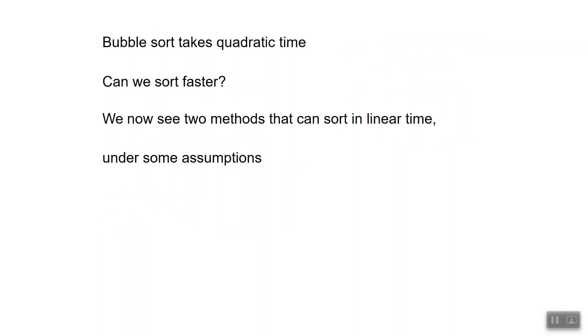Okay, bubble sort takes quadratic time, okay, as we saw earlier. That's not ideal. We'd like something which gets much closer to n. So can we sort faster? We are now going to see two methods that can sort in linear time under some assumptions. They are very clever and they are used heavily.